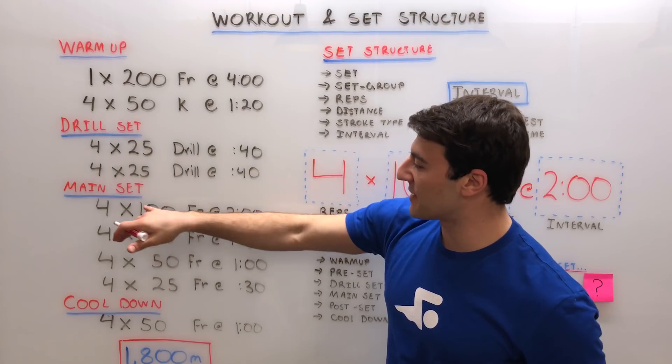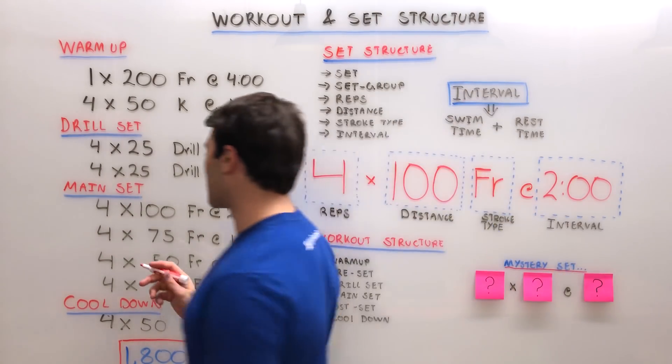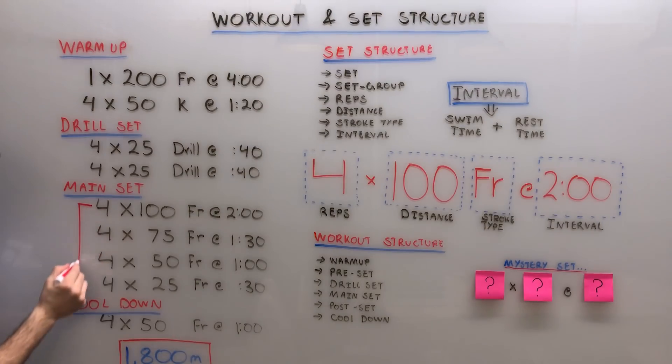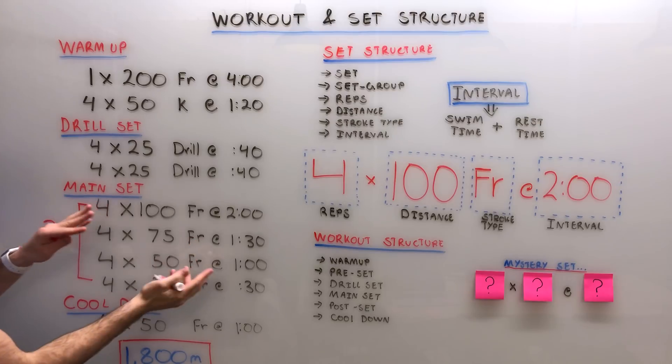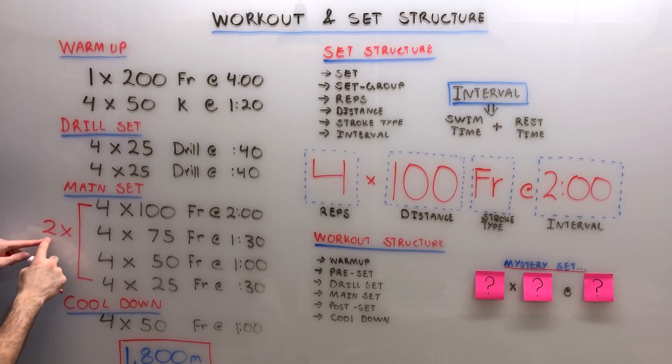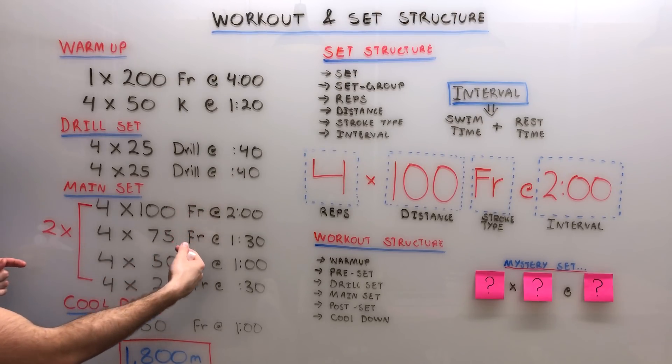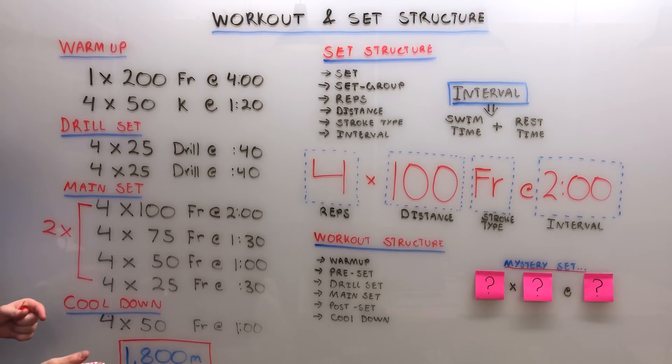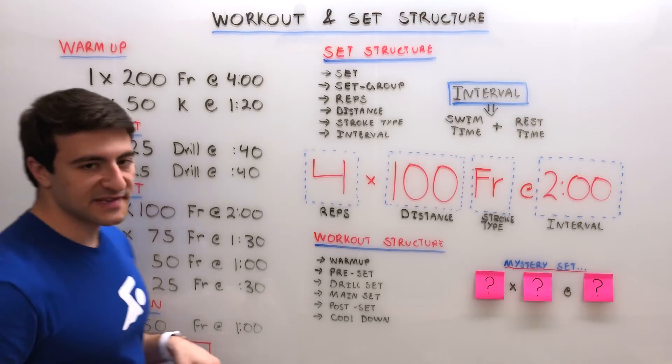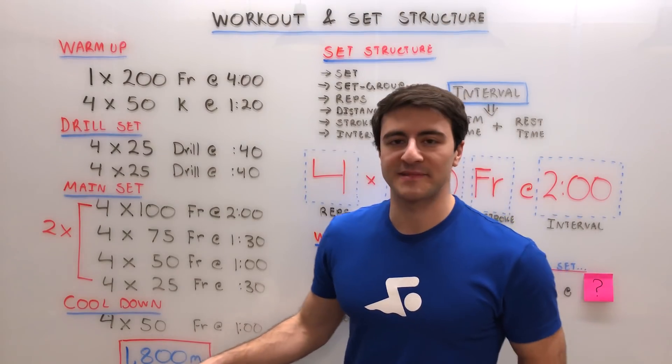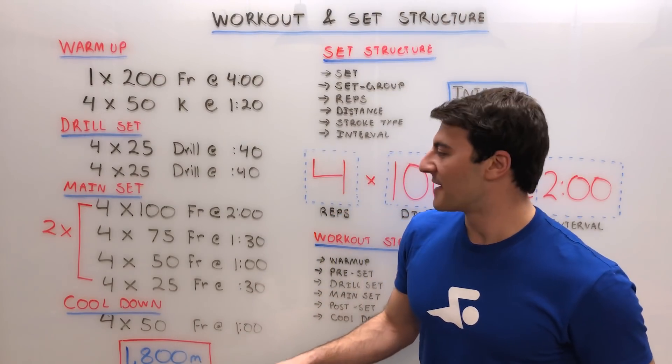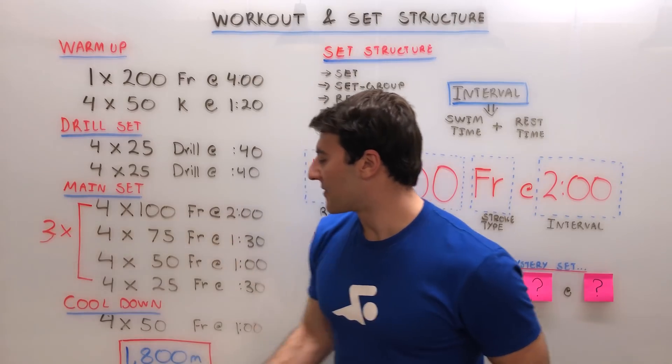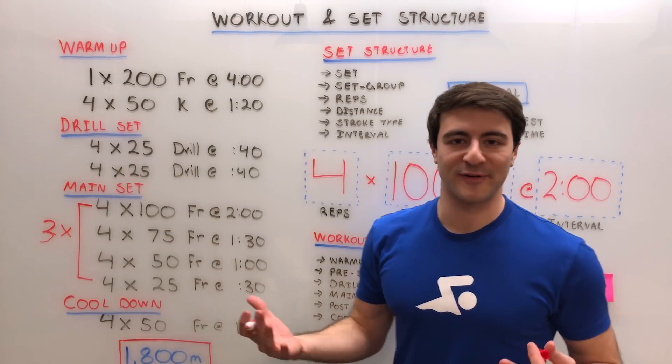In other words, instead of doing this main set once, you can even do it two rounds. So you might see something that looks like this: a bracket around the main set, and that way you do it multiple times. So your volume would go from 1800 meters, and you would add another 1000 meters to the workout. So instead of 1800 meters, this workout now becomes 2800 meters. And if you were to do this for three rounds, then this would become a 3800 meter workout.